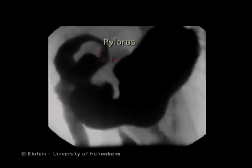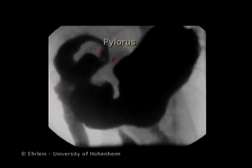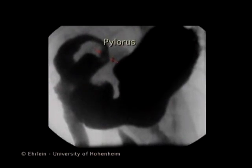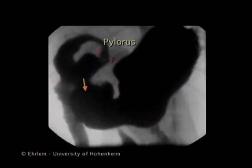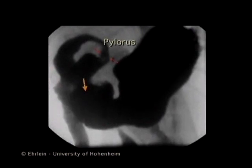During the contraction of the terminal antrum, the pylorus closes and the residues of chyme are forced retrograde into the relaxing mid-antrum. This is the retropulsion and grinding phase.